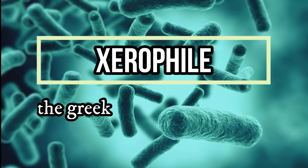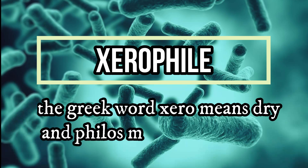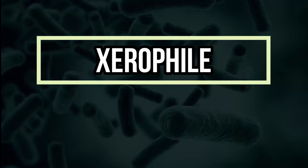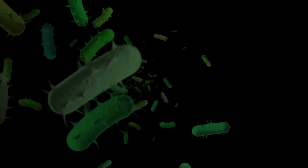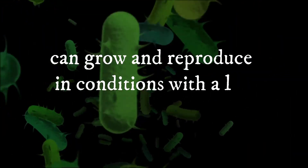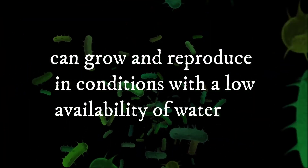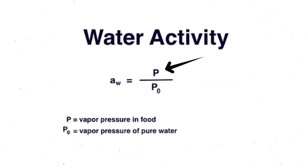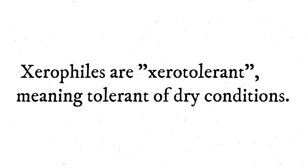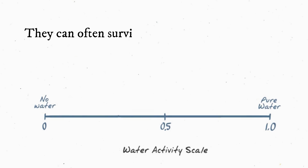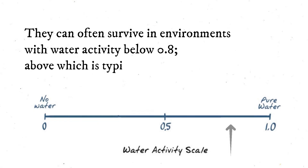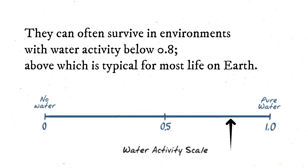5. Xerophile: the Greek word xero means dry and phylos means loving. A xerophile is an extremophilic organism that can grow and reproduce in conditions with a low availability of water, also known as water activity. Water activity is measured as the humidity above a substance relative to the humidity above pure water. Xerophiles are zero tolerant, meaning tolerant of dry conditions. They can often survive in environments with water activity below 0.8, above which is typical for most life on Earth.